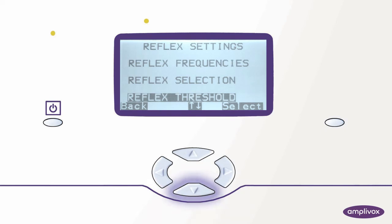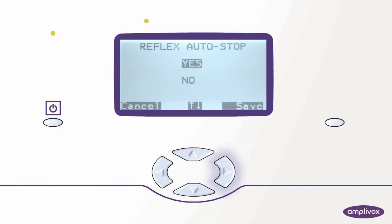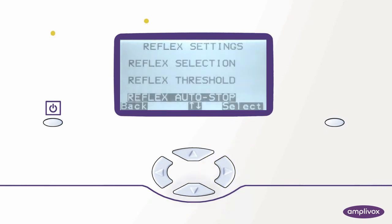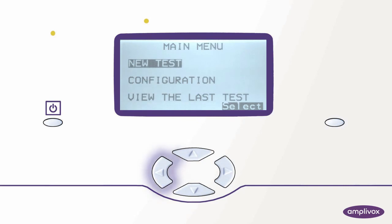Let's go a bit further down in the list. Reflex threshold is nothing we would like to change today. Reflex autostop we would like to activate in order to stop testing a frequency when a threshold was found. We have reached the last point in the list and as we don't want to change the filter we select the left key and are brought back to the main menu.